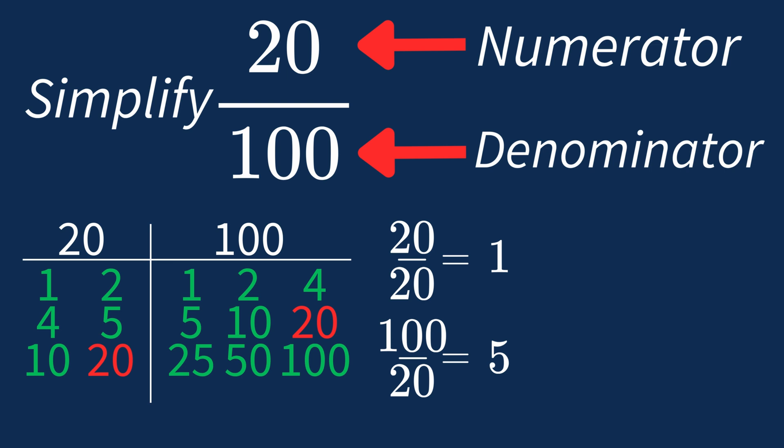So after dividing, the simplified fraction is 1 over 5. And we know that 1 over 5 is in its simplest form, because the only common factor between 1 and 5 is 1, and when 1 is the largest common factor, we know that fraction is already in its simplest form.